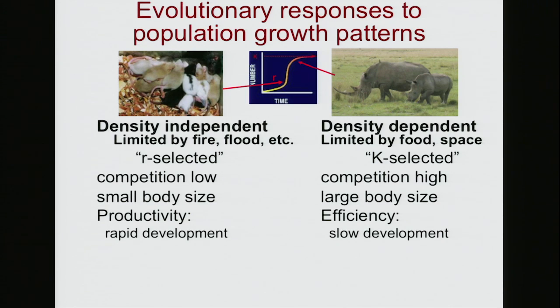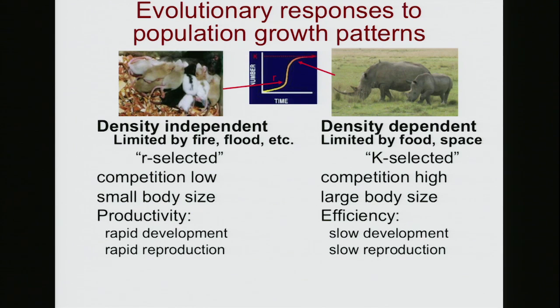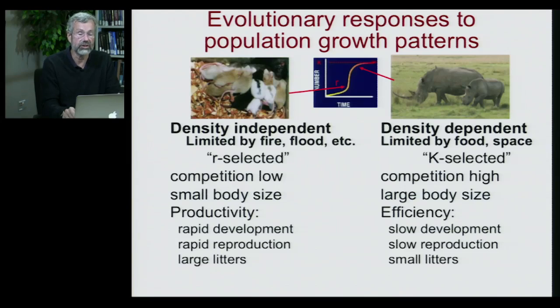Development is slow in K-selected species. R-selected species breed rapidly, while K-selected species breed very slowly. This rhino, for example, has a gestation length well over a year, whereas these rodents have gestation lengths just under a couple of weeks. Rodents have litters and breed like rabbits, while rhinos — like primates, like people — typically only have one offspring at a time. A lot of investment in just one kid.